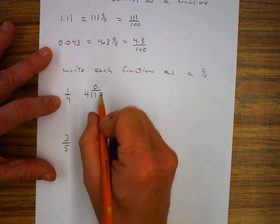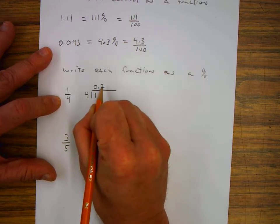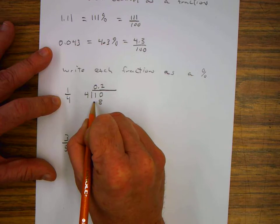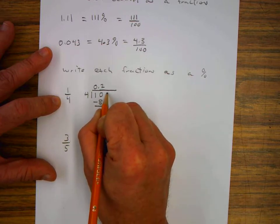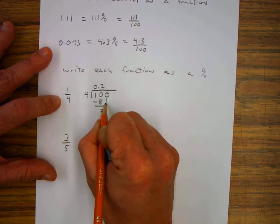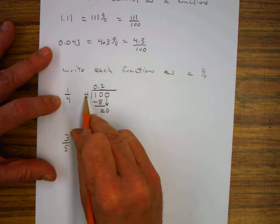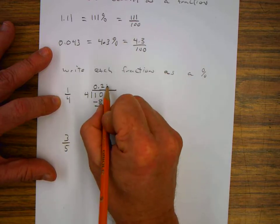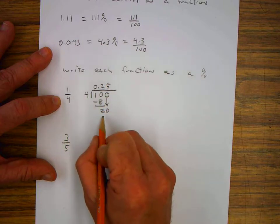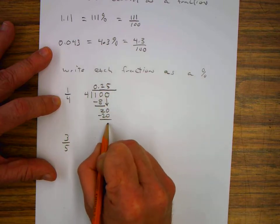4 goes into 10 two times. 2 times 4 is 8. I subtract. I have 2 left over. I add a 0. I bring it down. 4 goes into 20 five times. 5 times 4 is 20, and we have a remainder of 0.